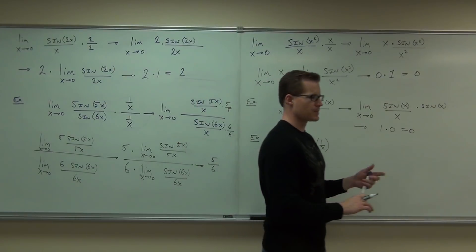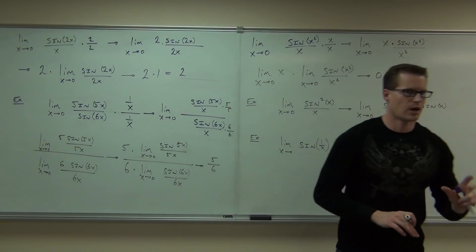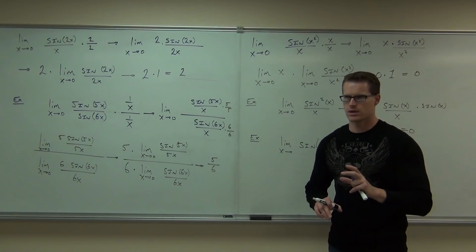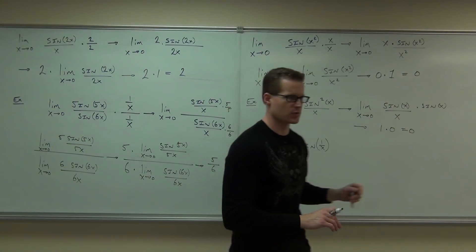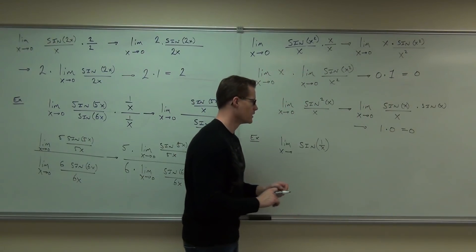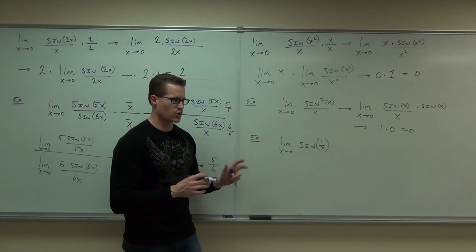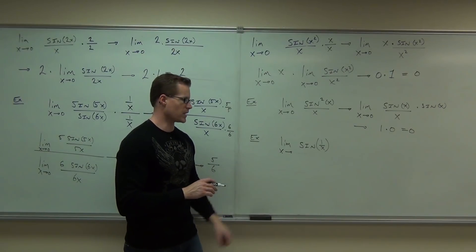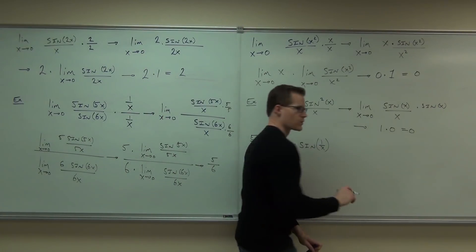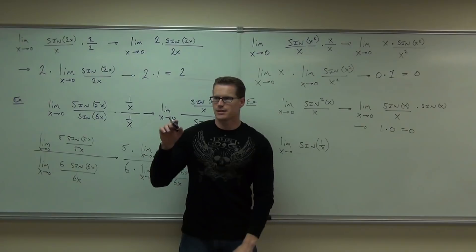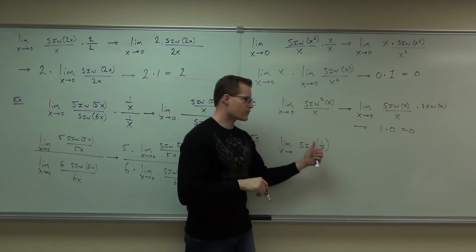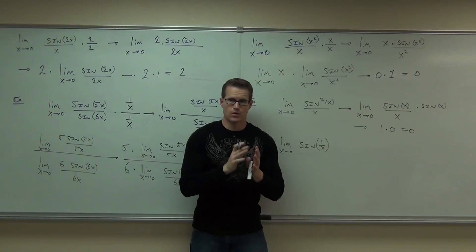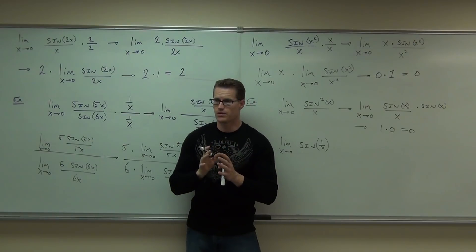Now we're going to talk about this. I'm not going to prove to you why it doesn't exist — you can get there on your own, or you can look; the book has a proof. I'm going to do this graphically just to show you what this looks like. Sine is an oscillating function, it goes up and down. One over x, as you get close to 0, goes to infinity — it goes there very fast. So what happens with this graph?